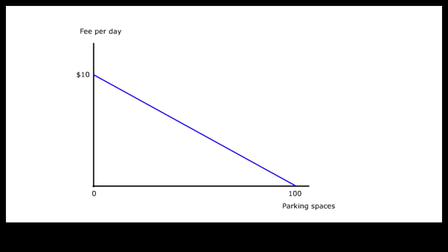In between, drivers' demand is arranged by descending order of their needs. When the number of parking spaces is equal to or more than the number of cars needing parking, free parking results in maximum utility. This utility is measured by the green area under the demand curve. Because the green area represents utility that is not paid for when parking is free, it is called consumer surplus.